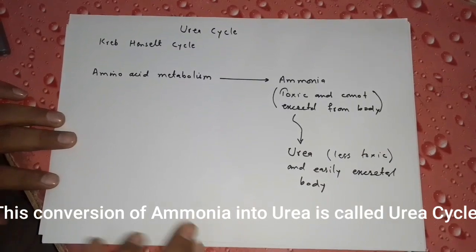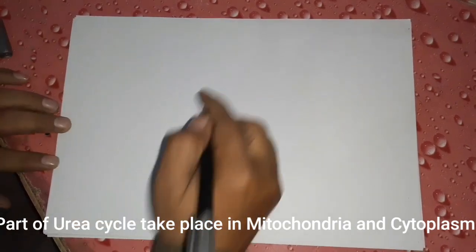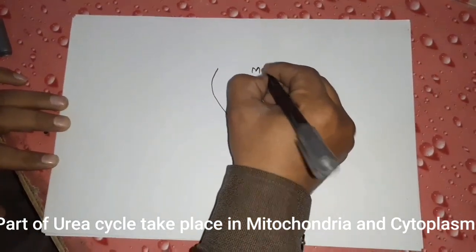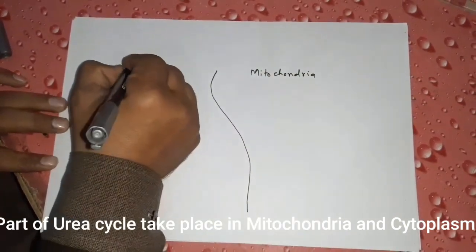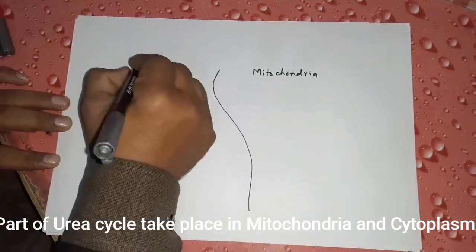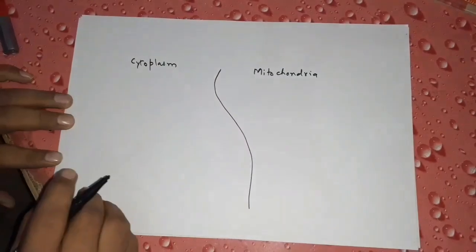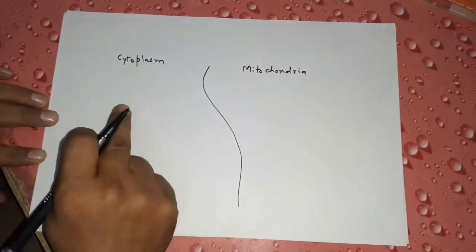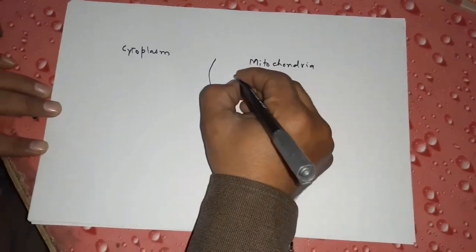Now let's look at the procedure of the urea cycle. The cell has two areas: the mitochondria and the cytoplasm. The urea cycle takes place in both the cytoplasm and the mitochondria.